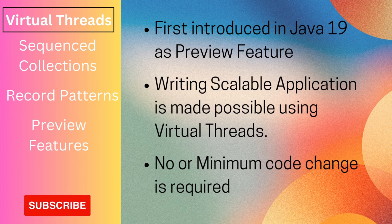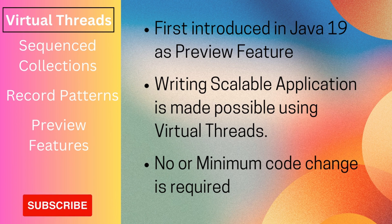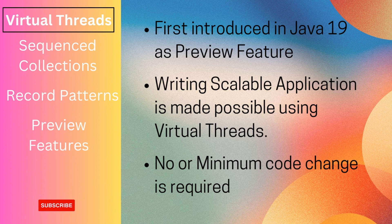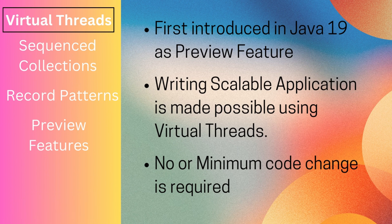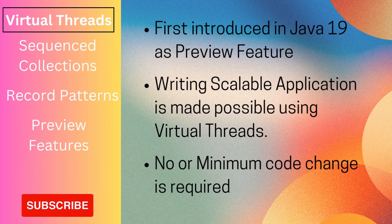When a virtual thread has to wait or is blocked, the platform thread will execute another virtual thread. That allows us to run thousands of virtual threads with just very few operating system threads. The best part is we don't have to change the existing Java code. We simply tell our application framework to use virtual threads instead of platform threads.